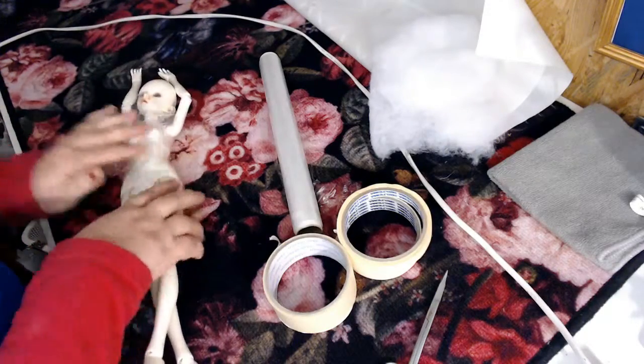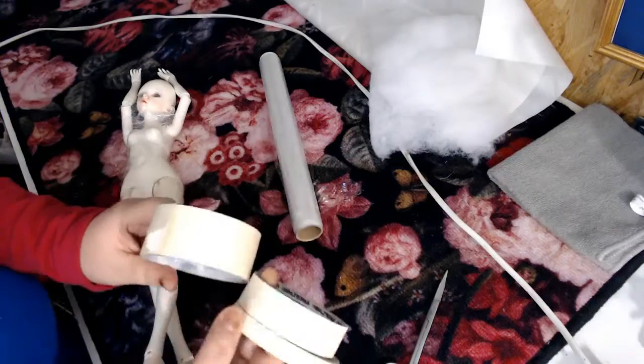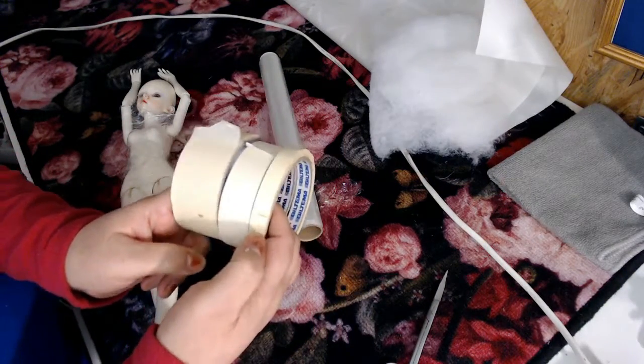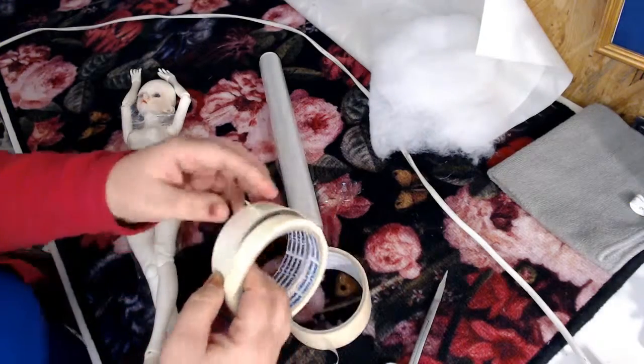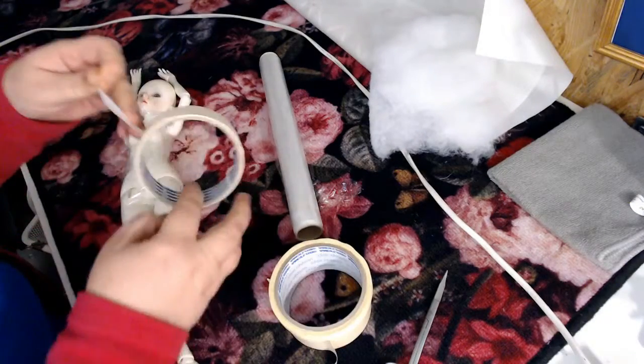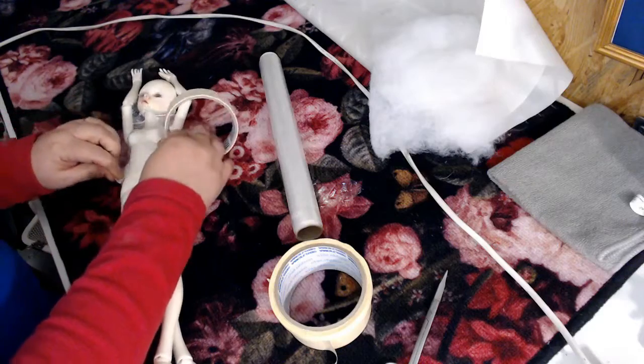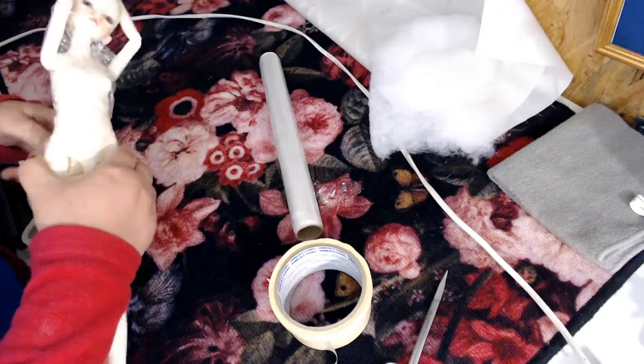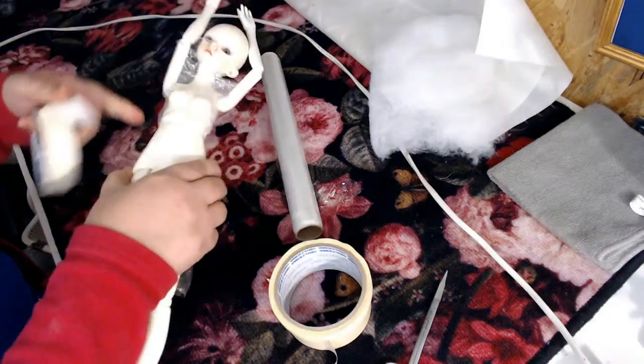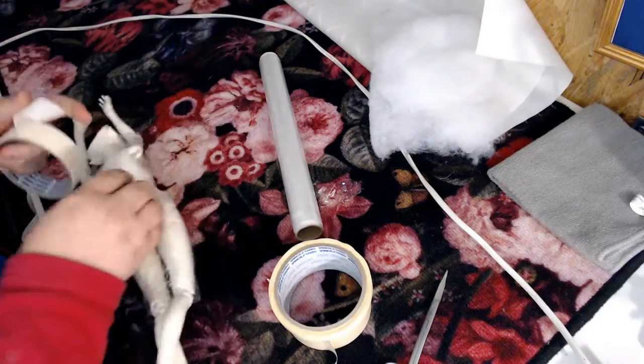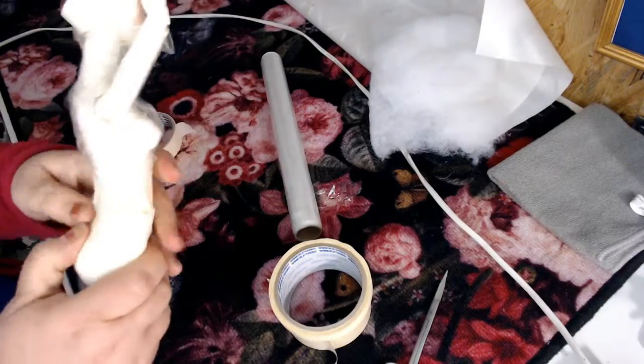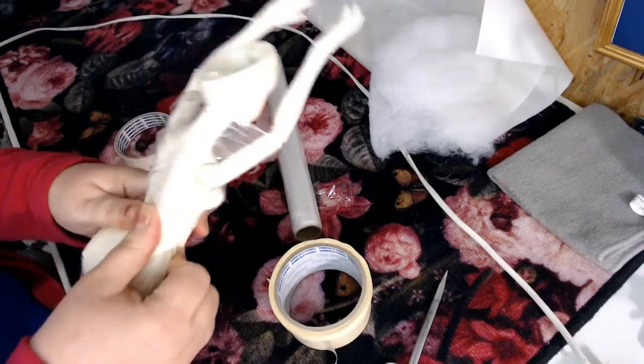Then I have three different sizes of painters tape. I start with a medium size and I put it on her waist like this. I try to put it on really snug. I try to smooth it out a little bit.